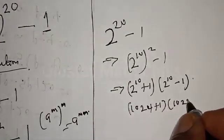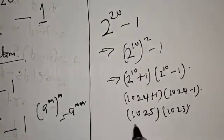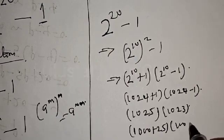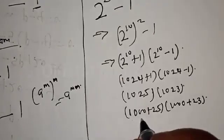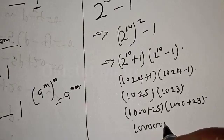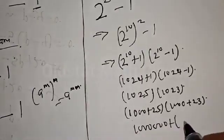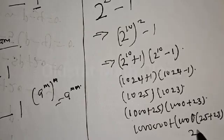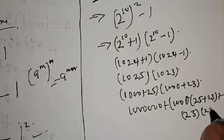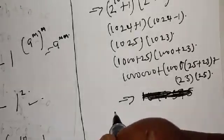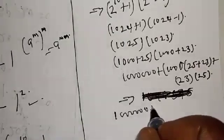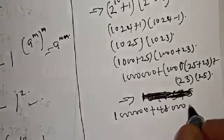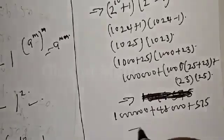That gives us 1024 plus one, into 1024 minus one, which is 1025 into 1023. Write this as 1000 plus 25, into 1000 plus 23. Opening the bracket: 1000 times 1000 is one million, plus 1000 times 25 plus 23, plus 23 times 25. This gives one million plus 48,000 plus 575.